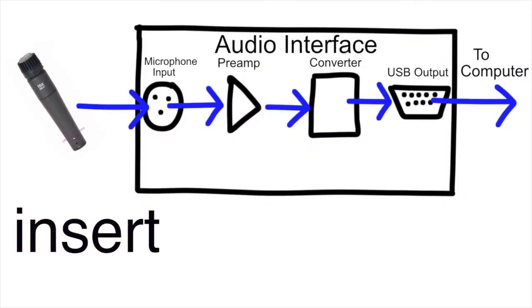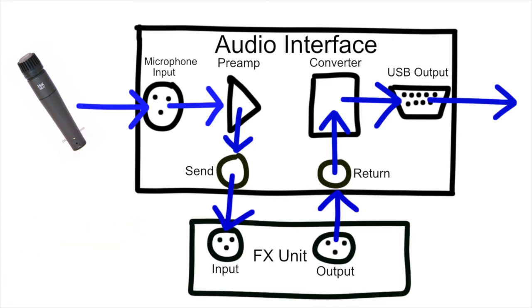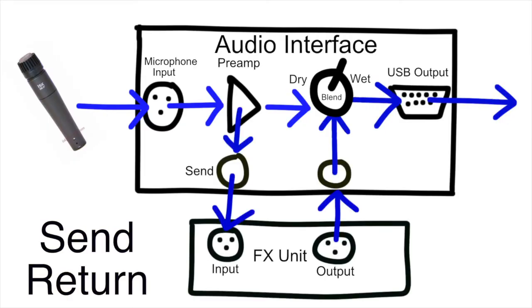Now the difference between a send return and an insert — although they're very similar, they're slightly different. With an insert, as soon as you plug into the jack, it'll automatically interrupt the signal path and force the audio to go to the send and to the return. Whereas with a send return, it'll be a duplicate of the audio signal that gets sent out, returned, and you can dial in how much of the return signal you want to blend in with the original signal.